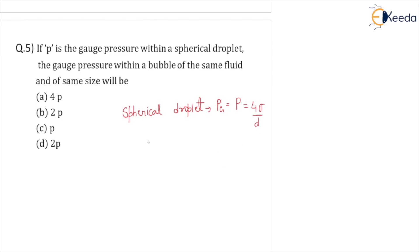The question is you have to find the gauge pressure p dash in case of a bubble of the same size, diameter remains the same. So p dash is nothing but we are having two surfaces in contact. We will write 2 times 4 sigma upon d.